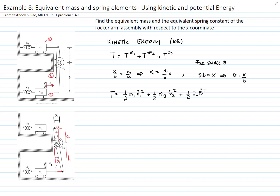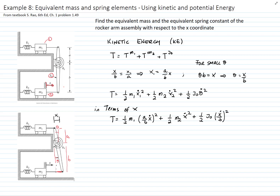The kinetic energy of the bar, since we are taking it from a fixed point, will be one-half J_O times theta-dot squared. In terms of X, we substitute theta with the expression we found. So we can write the total kinetic energy as one-half M1 times (A over B) squared times X-dot squared, plus one-half M2 times X-dot squared, plus one-half J_O times (X-dot over B) squared.